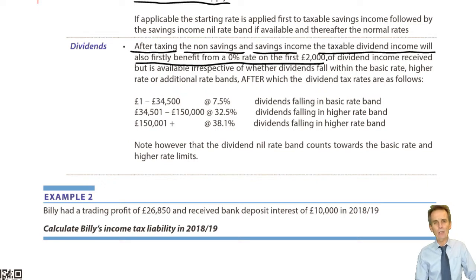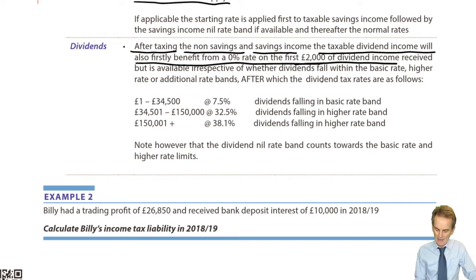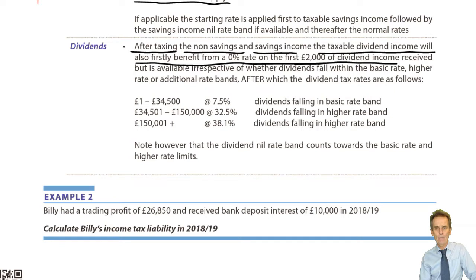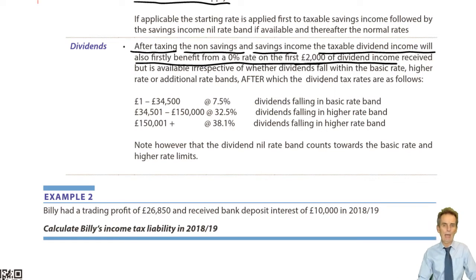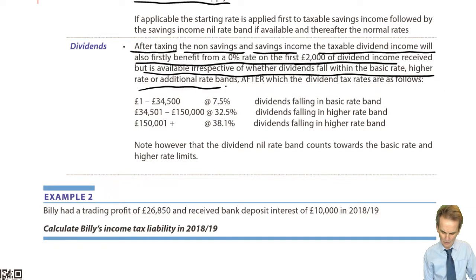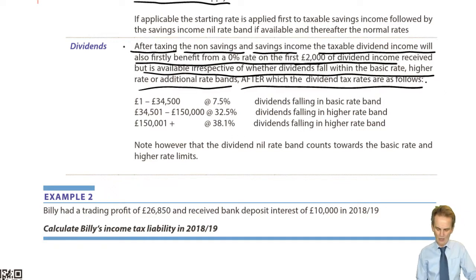The first £2,000 of dividend income is taxed at 0%, and importantly this is not impacted by whether you are a basic rate, higher rate, or additional rate taxpayer. With the savings income nil rate band, you only get £1,000 as a basic rate taxpayer, £500 as a higher rate taxpayer, and nothing as an additional rate taxpayer. The dividend income nil rate band of £2,000 is available to every taxpayer irrespective of which rate band the dividends fall into.